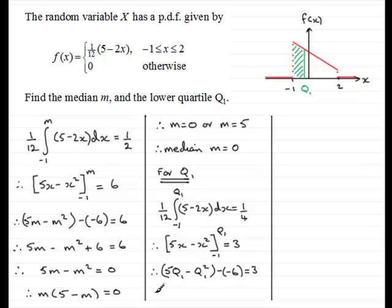So simplifying this, what we have is 5Q₁ - Q₁² + 6, and if I subtract three from both sides I'm left with plus three equals zero. Being a quadratic equation, I want to rearrange this to start with plus Q₁ squared, so if I times both sides by minus one we're going to have Q₁² - 5Q₁ - 3 = 0. Now this quadratic won't factorize, so we're going to use the quadratic formula.